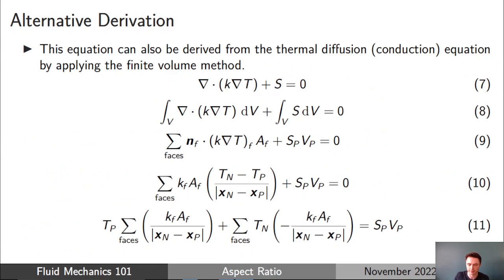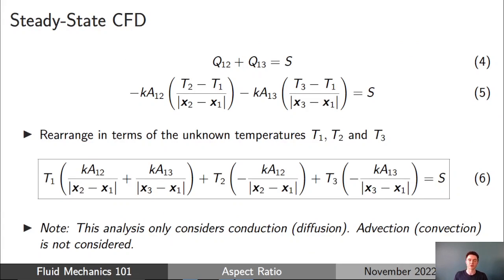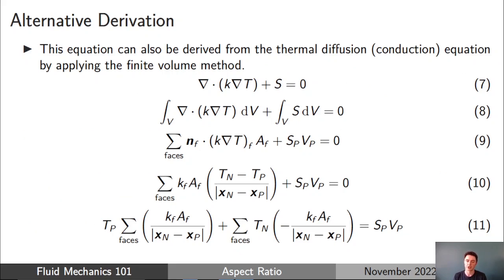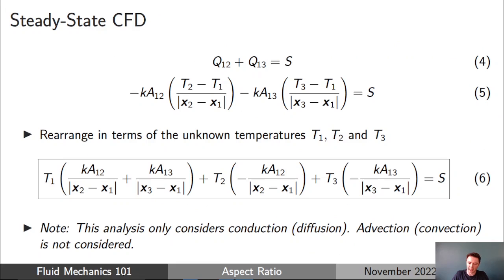You can also derive this equation by applying the finite volume method, integrating over the volume of the cell, using Gauss's divergence theorem to express the volume integral as surface integrals, and rearranging — arriving at equation 11, which is equivalent to equation six. I won't go through the finite volume method in detail here as I've covered it in other videos, but you can pause and work through it yourself if you wish.